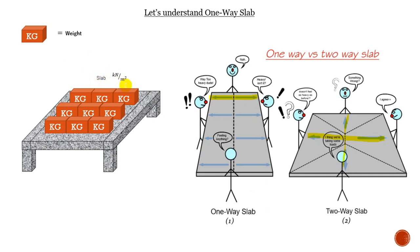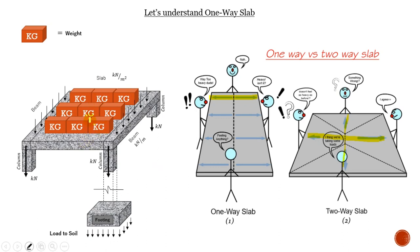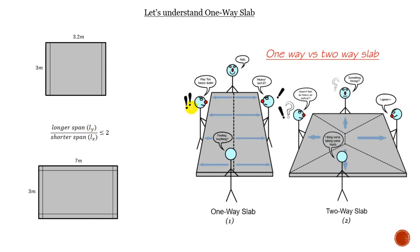The load in kN/m² is transferred to its supporting beam in kN/m, then the beam takes it to the columns — which then includes a concentrated load — and the columns also take it down to the footing, where it should safely be distributed to the soil. This is the basic flow of load once it's put on the slab.